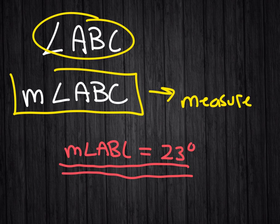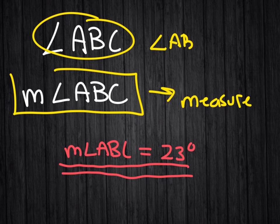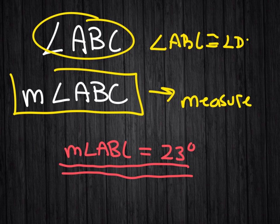If we are talking about the object, we might say this object, ABC, is congruent or identical to another angle, DEF.